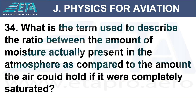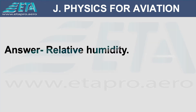What is the term used to describe the ratio between the amount of moisture actually present in the atmosphere compared to the amount the air could hold if it were completely saturated? Answer: relative humidity.